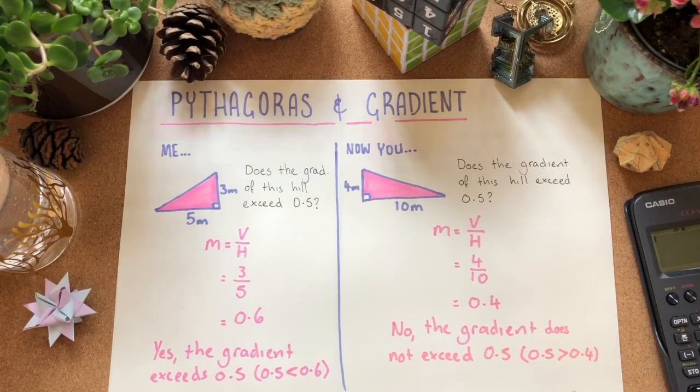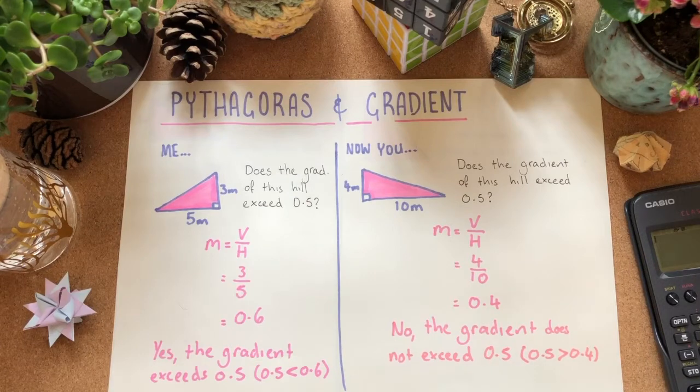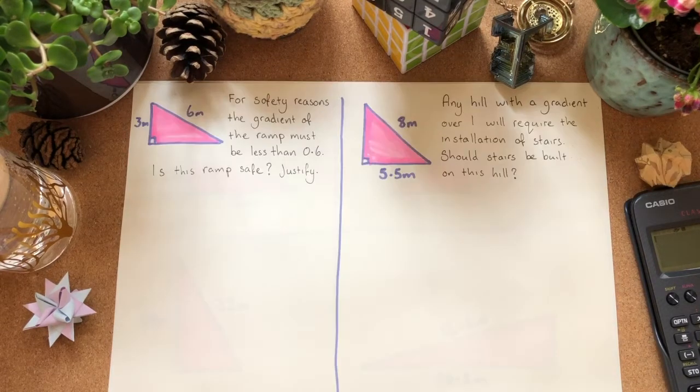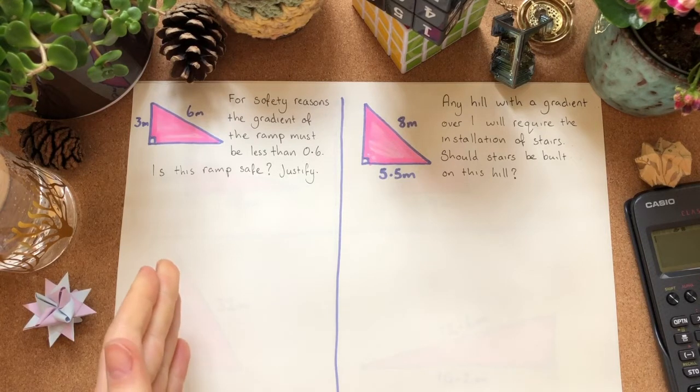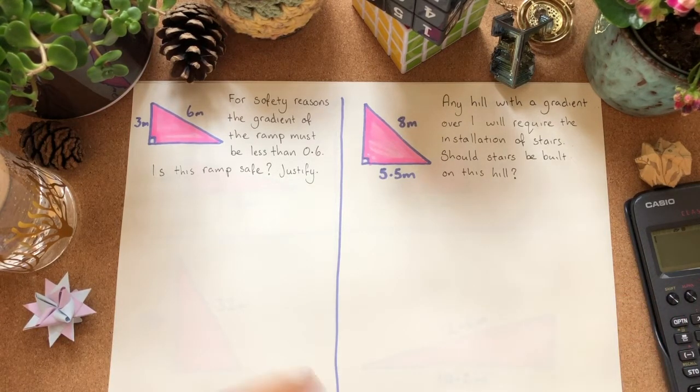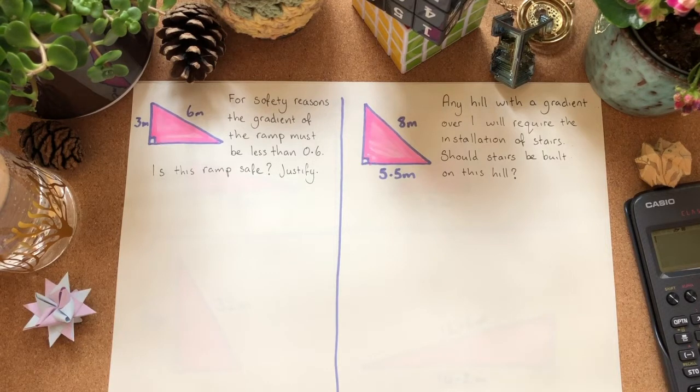No, the gradient does not exceed 0.5 and then 0.5 is greater than 0.4. Okay, let's step it up a little. So, this one here for me and this one for you. So, for safety reasons, the gradient of the ramp must be less than 0.6. Is this ramp safe?